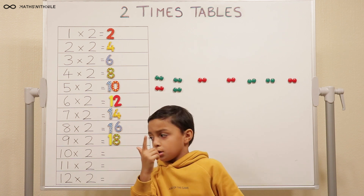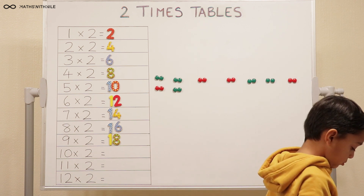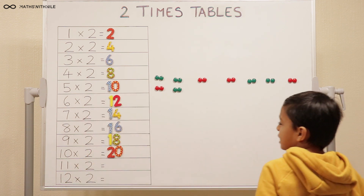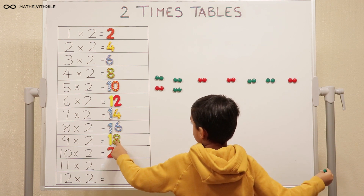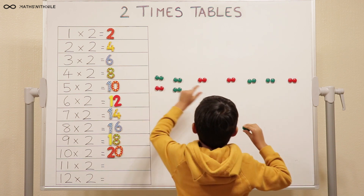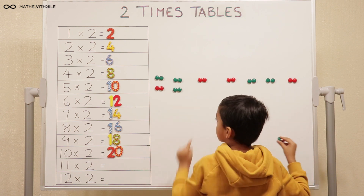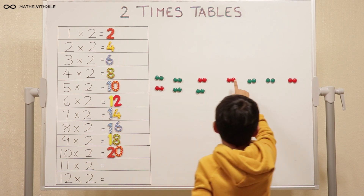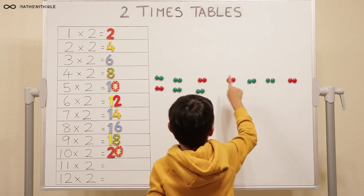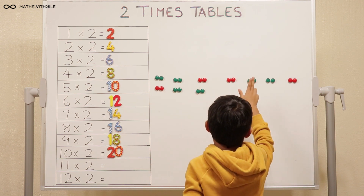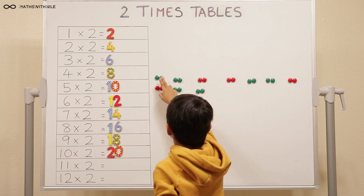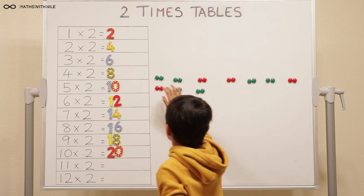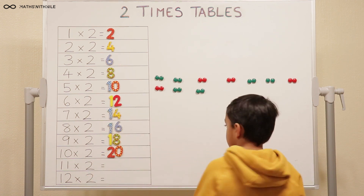Twenty. So ten times two is twenty. But make sure you put the counters to match the questions. So this is ten groups of twos. Let's count: two, four, six, eight, ten, twelve — start again, take your time — two, four, six, eight, ten, twelve, fourteen, sixteen, eighteen, twenty. Good. So ten times two equals twenty.